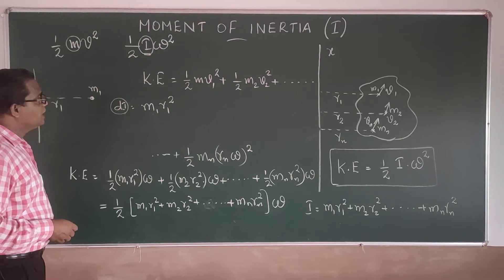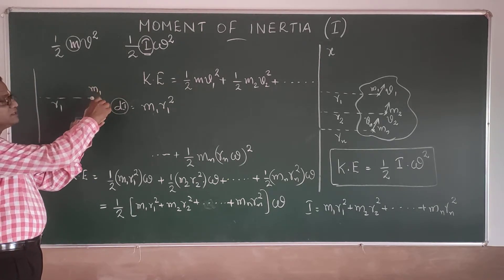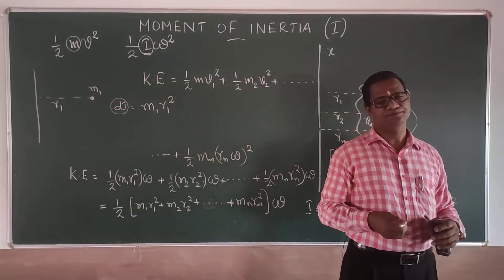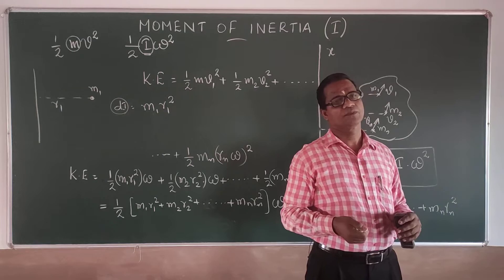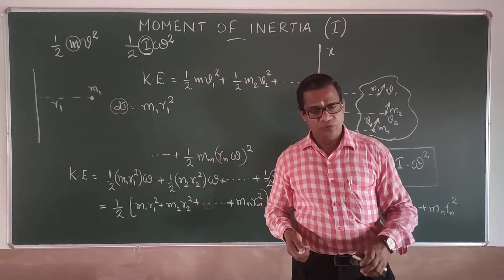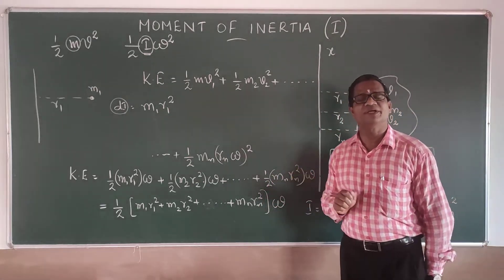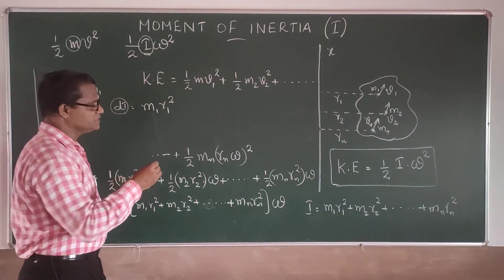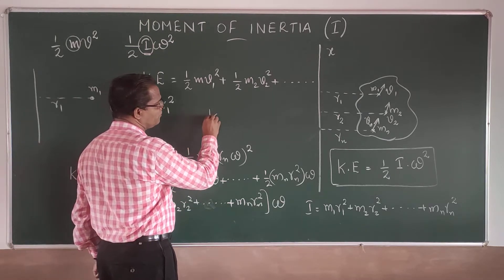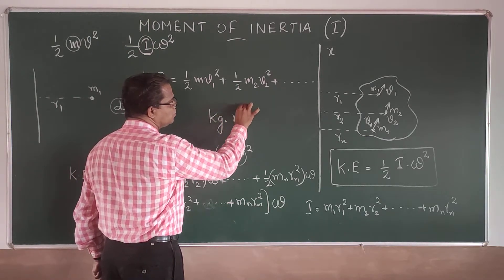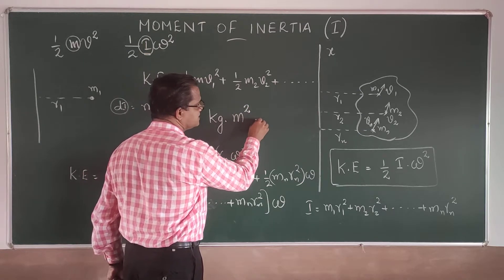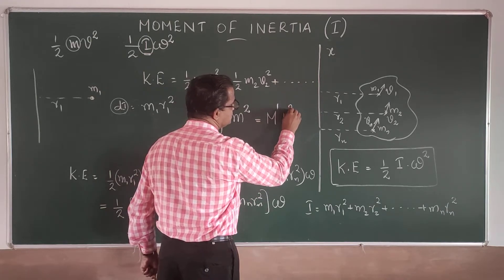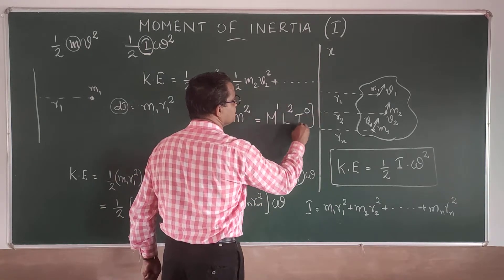Similarly, as the mass increases, the moment of inertia also increases. The unit of moment of inertia is kilogram·meter² (kg·m²), and its dimensional formula is M¹L²T⁰.